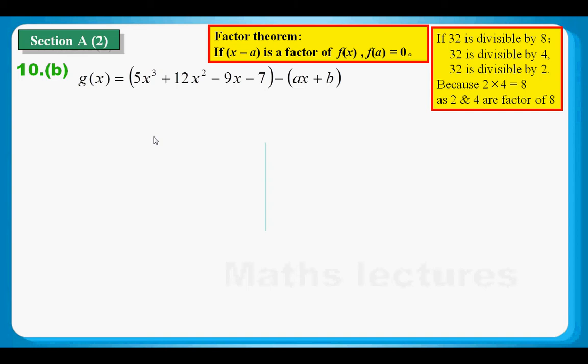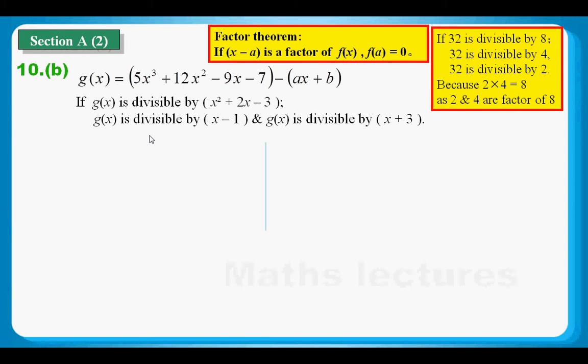Here is a little bit more about division. Let's say if I have a number 32, which is divisible by 8. Then, 32 is divisible by 4 as well as by 2, because 2 and 4 are both the factors of 8. So, with this same theory, it happens to polynomials as well. x minus 1 and x plus 3 are both factors of the polynomial x squared plus 2x minus 3. So, if g(x) is divisible by x squared plus 2x minus 3, then g(x) is also divisible by x minus 1 and x plus 3.